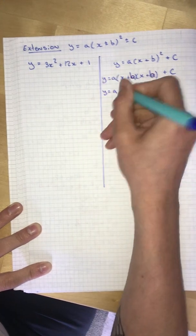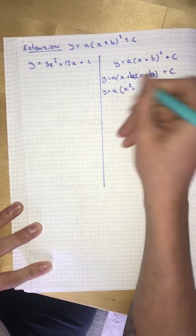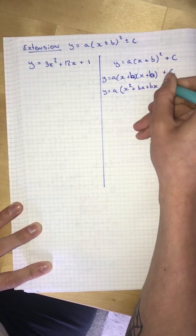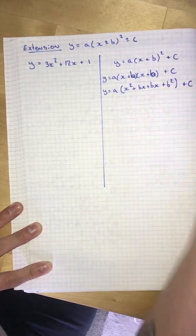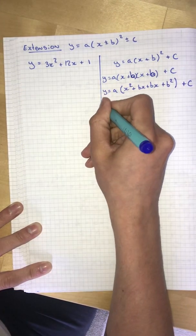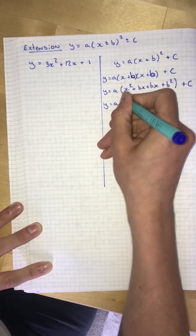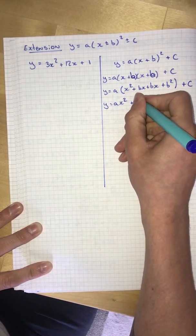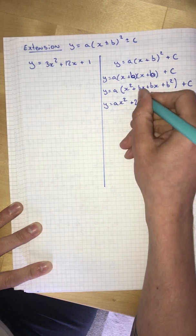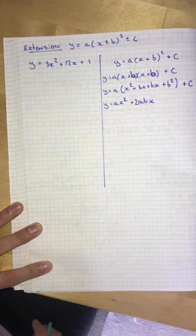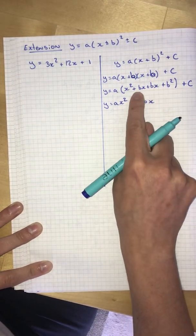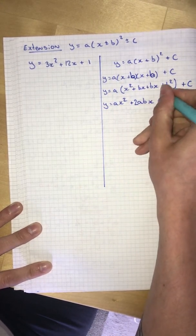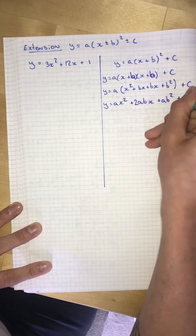And we get ax squared plus bx plus bx plus b squared plus c. So we get ax squared plus 2abx. Because bx plus bx would be 2bx times a would be 2abx. plus b squared plus c.